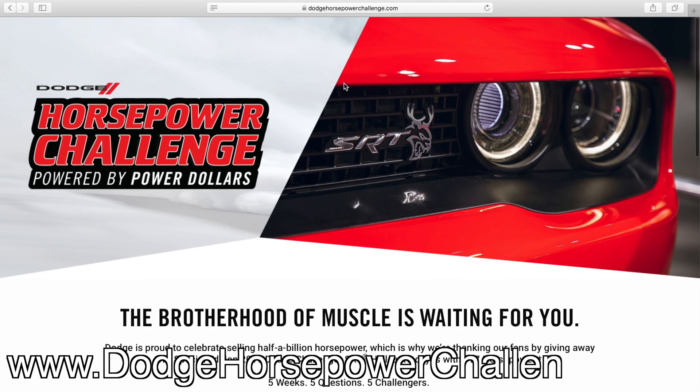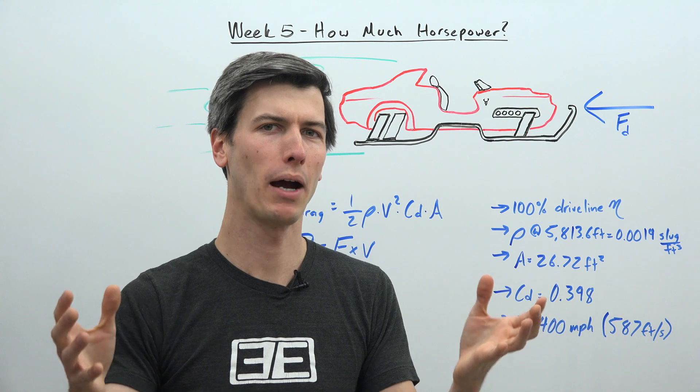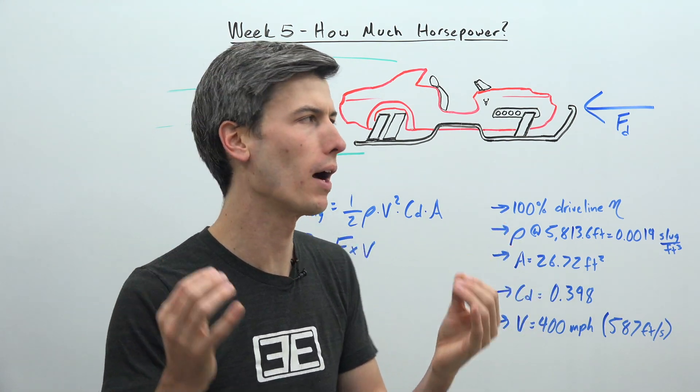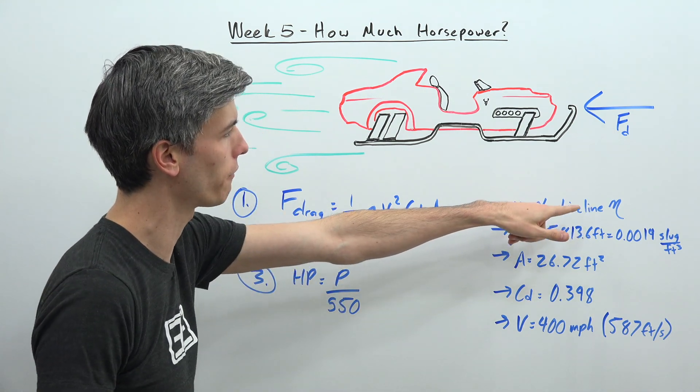This week's question is how much horsepower would Goldberg's sleigh need in order to travel at 400 miles per hour? We're able to assume that we have 100% driveline efficiency.